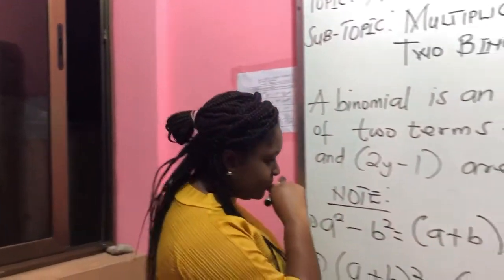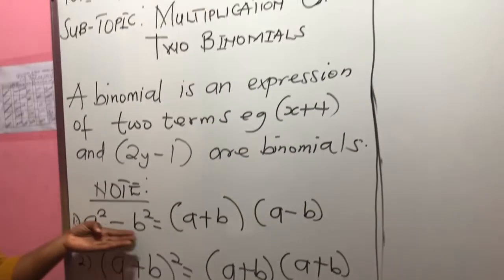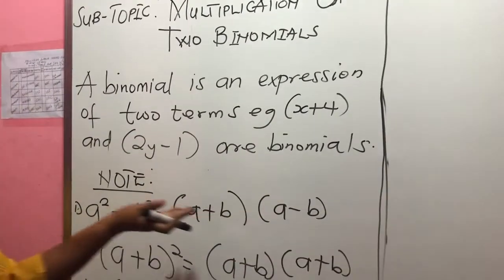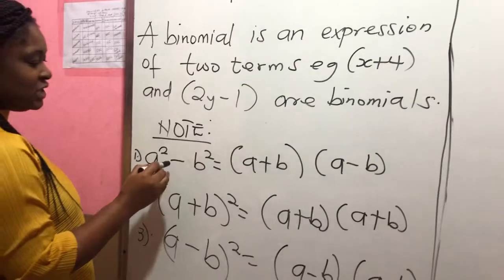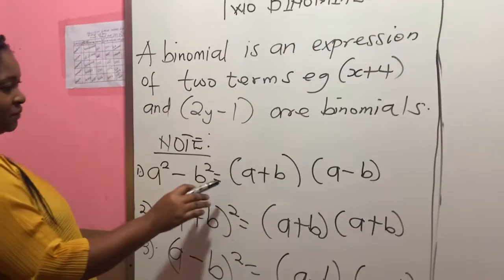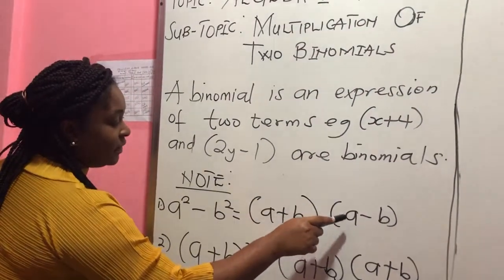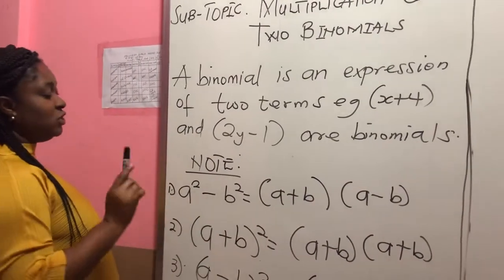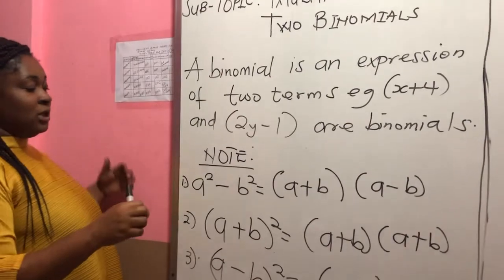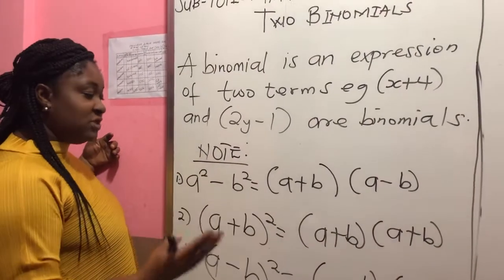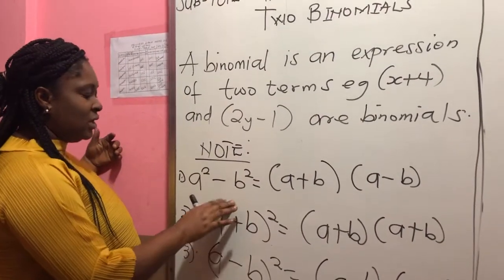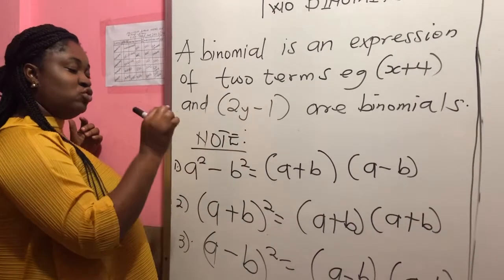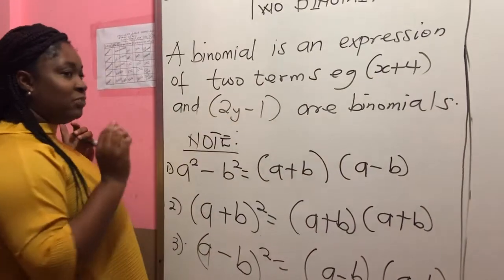Now let's note this. In the distributive property, when you have A plus B multiplied by A minus B, note the difference. This particular one comes up a lot in objective questions. When you have a number to the power 2 minus a number to the power 2, this is how you express it.